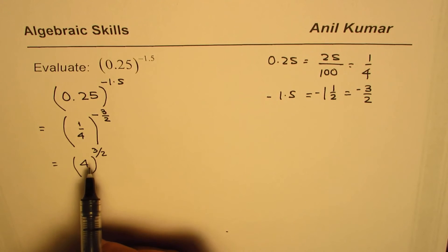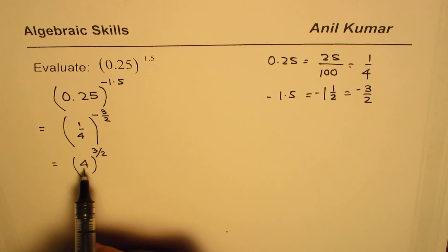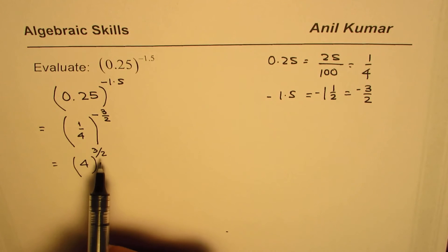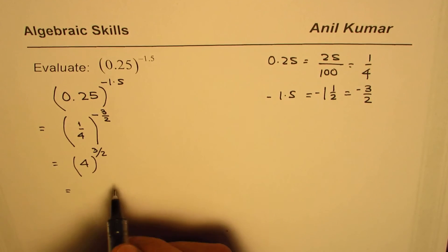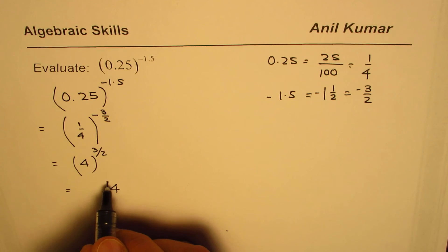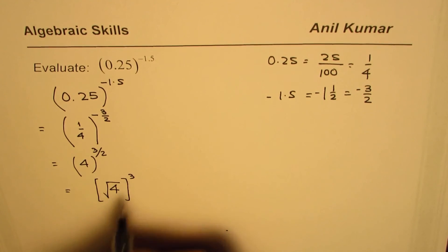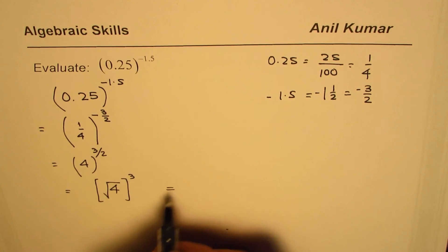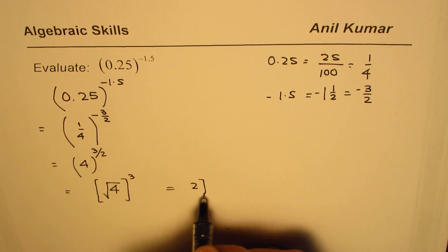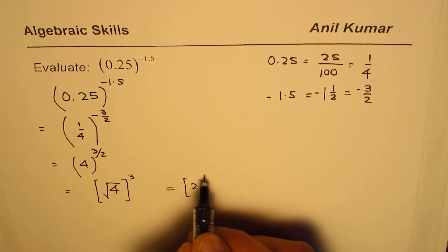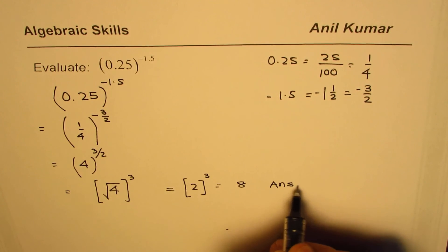Now we have the option to cube and then take the square root, or we can take the square root and then cube. I prefer to do the square root first. So we'll find the square root of 4 first, and then cube it to get the result. The square root of 4 is 2, and 2 cubed equals 8 — that is the answer.